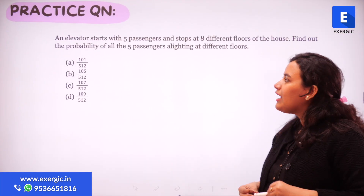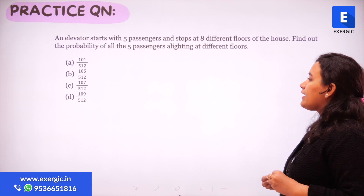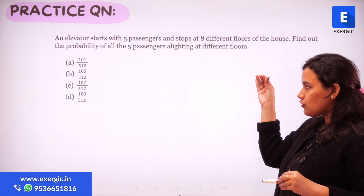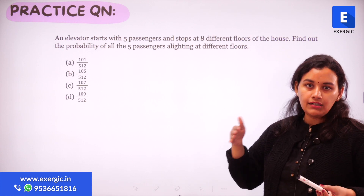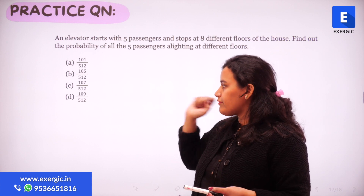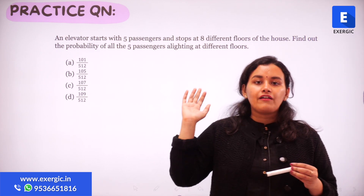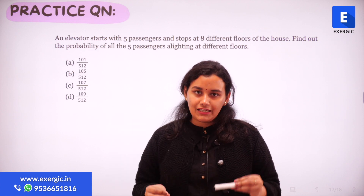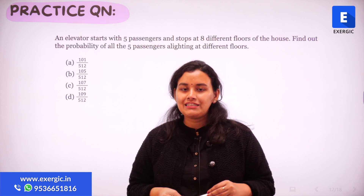Here's the practice question for you. An elevator starts with five passengers and stops at eight different floors of a house. Find out the probability that all five passengers alighted at different floors. The options are: 101 upon 512, 105 upon 512, 107 upon 512, or 109 upon 512. Do try this question — write down your answer and solution in the comment section below and cross check it with the solution we will be giving. Thank you so much for watching. I hope you found this video helpful. I'll see you tomorrow with another question of quantitative aptitude. Take care. All the best.